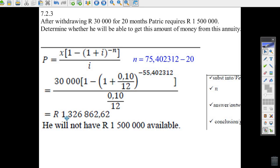And he's got 1.3 million. It's dropped below the 1.5. So he's not going to have that one and a half million available. So there you go.